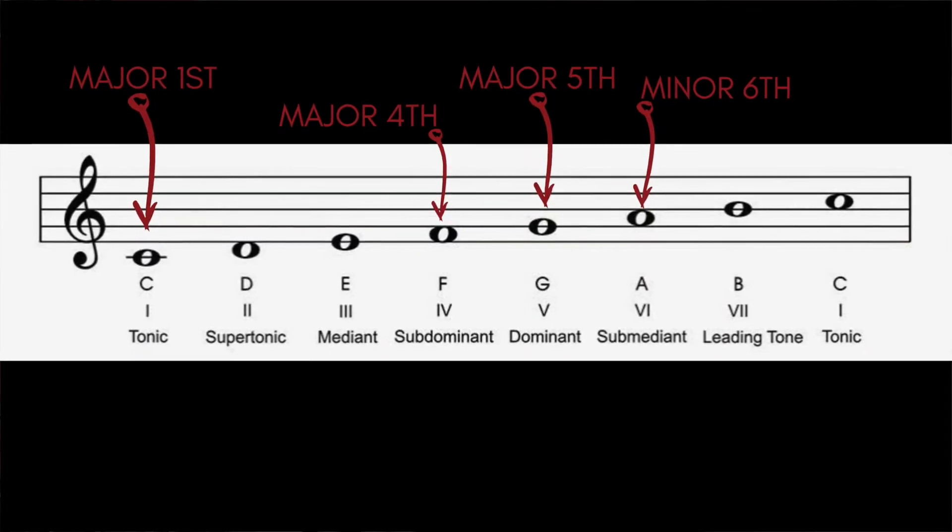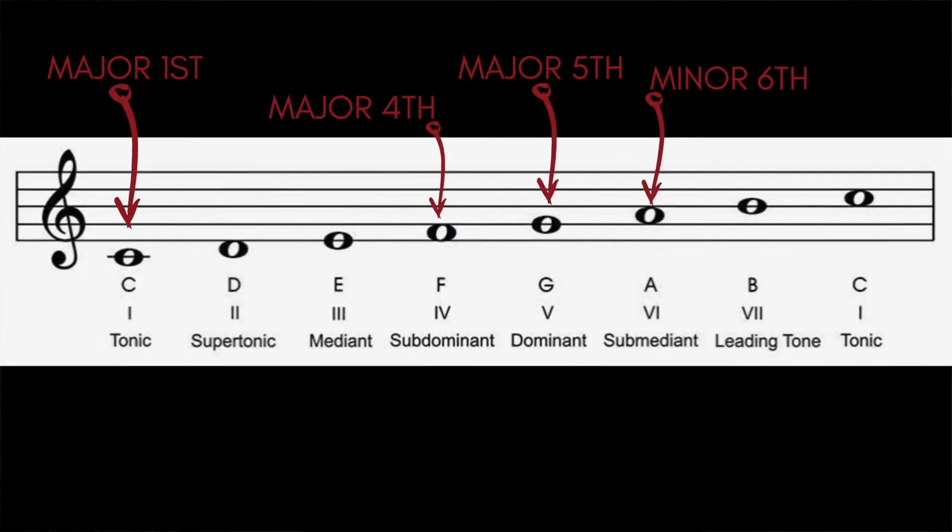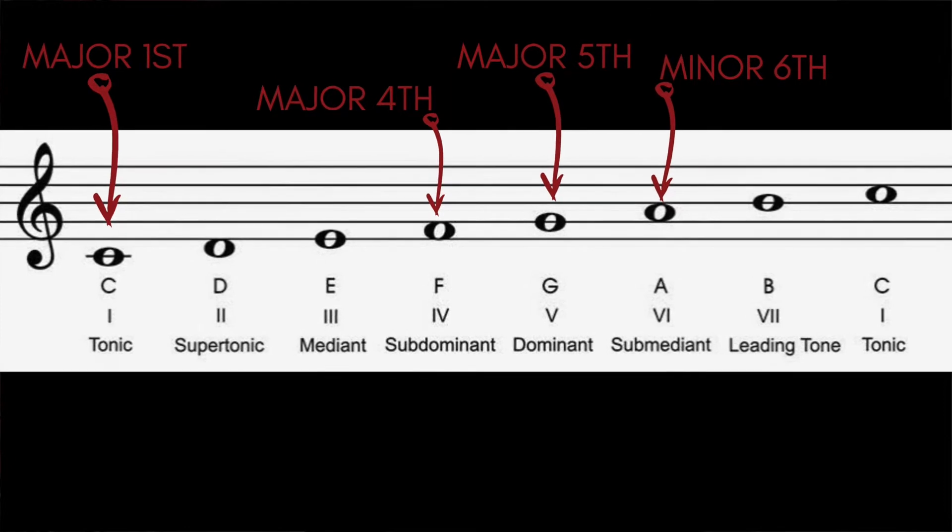Next up: pop chord progressions. Unlike the 12-bar blues, pop music isn't restricted to one chord progression. However, there are some common go-to major chord progressions that we often see. Have you ever heard of the four chord song? The four chord song is made up of the major 1st, major 5th, minor 6th, and major 4th degrees of a scale.